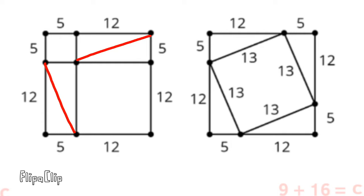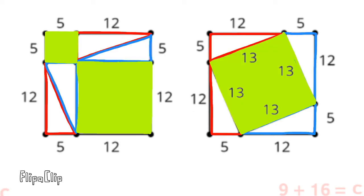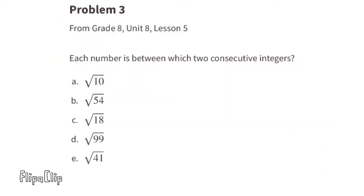The shape on the right contains one large square that is 13 by 13, or 13 squared, but it also contains those same four triangles as the shape on the left. That means the shape on the left — containing 12 squared and 5 squared — has the same area left over as the shape on the right containing 13 squared, proving that their areas are equal.